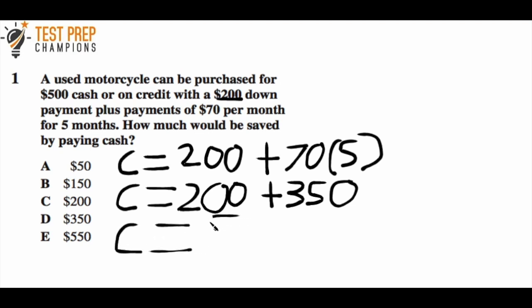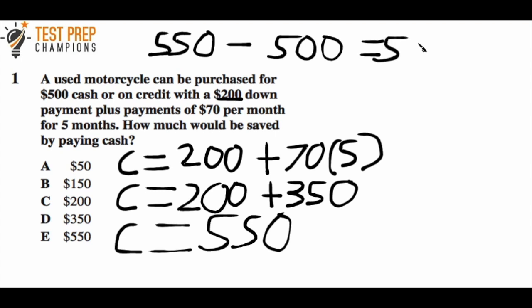Now the cost for credit is 550. We want to find the difference between that and paying cash. The cost for credit is 550, and the cost for cash is 500. So 550 minus 500 equals 50. Answer A is correct.